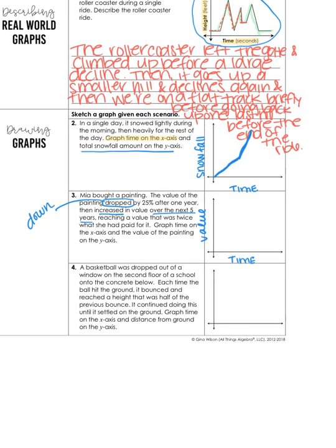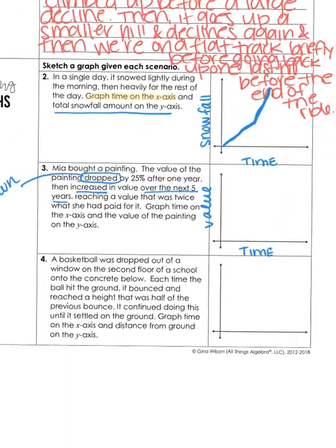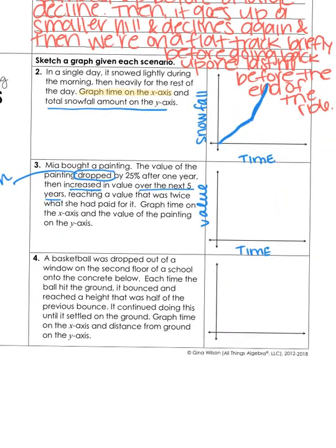For number four, it says: a basketball was dropped out of a window on the second floor of a school onto the concrete below. Each time the ball hit the ground, it bounced and reached a height that was half of the previous bounce. It continued doing this until it settled on the ground. Graph time on the x-axis and distance from the ground on the y.